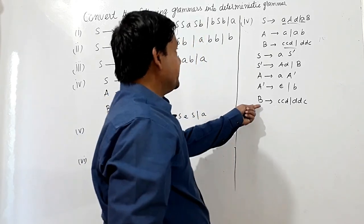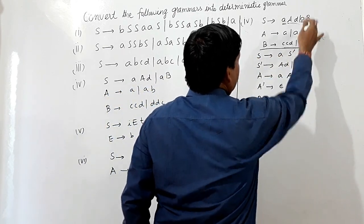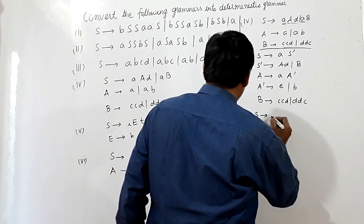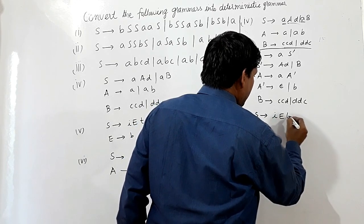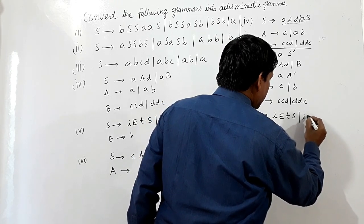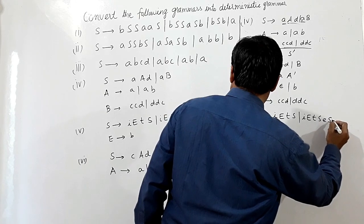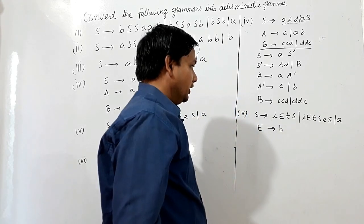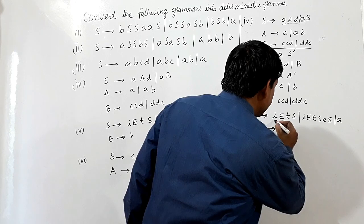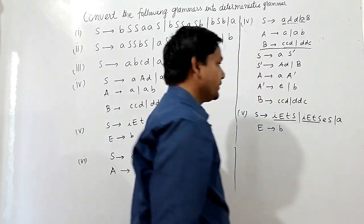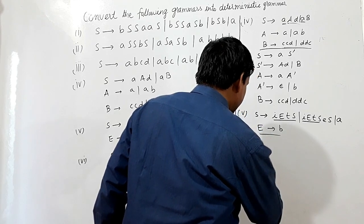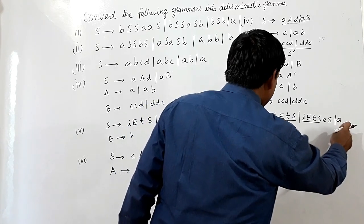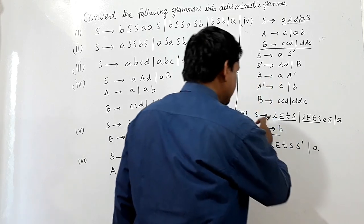This is the deterministic grammar for that grammar. Now I will take another grammar: S is producing IETS or IET S ES or A, and E is producing B. You can see here IETS is common, so I can take IETS common and write S → IETS S-dash or A. Nothing is common for A so I write it directly.